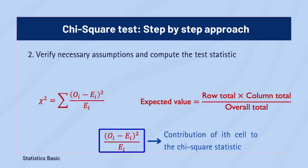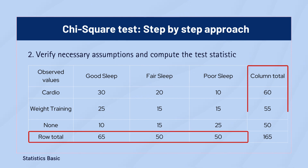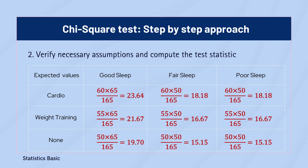This value represents the contribution of the i-th cell to the chi-square statistic. We'll first calculate row and column totals alongside the overall total observed count, then use the expected value formula to calculate the expected frequencies in each cell of the contingency table.